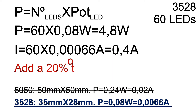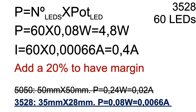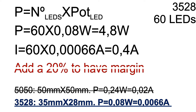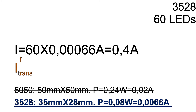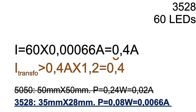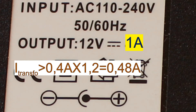With that data, you can choose among the different available transformers, choosing one with 20% more power than calculated to avoid possible overheating. To calculate that additional 20%, multiply by 1.2. Since we had a current of 0.4A, we obtain 0.48A as the minimal current for the transformer. We could then choose a transformer of 1A or 12W, or even less.